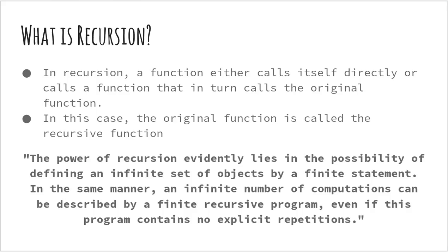What is recursion? Recursion in computer science is a method where the solution to a problem depends on solutions to smaller instances of the same problem. So essentially we can break down a problem into smaller instances. This approach can be applied to many types of problems and recursion is one of the central ideas of computer science.